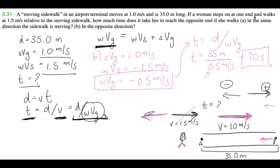So that's everything. If she's walking in the same direction, it only takes her 14 seconds, because the sidewalk and her are both working together. And if she's walking against the sidewalk, that will take her 70 seconds — so much longer. That's the end of this problem. I hope this was helpful. If you have any questions, you know where to reach me in the comments or send me an email. Thank you so much for watching. Please don't forget to like and subscribe if this was helpful, and see you next time.